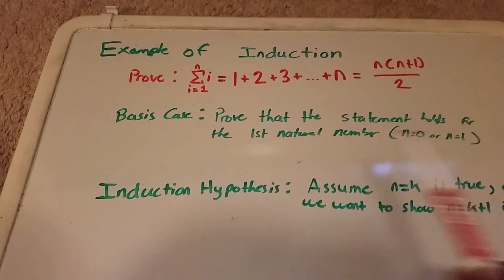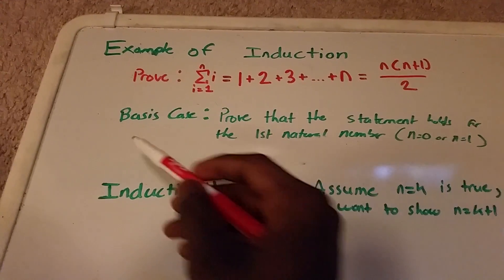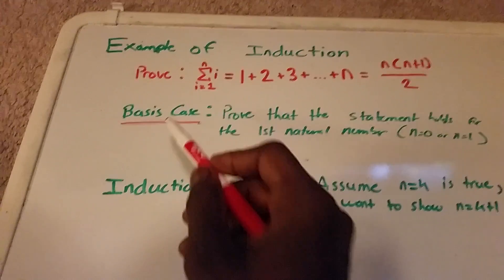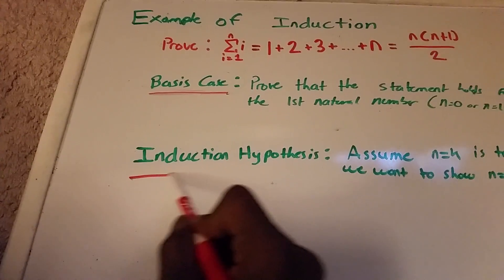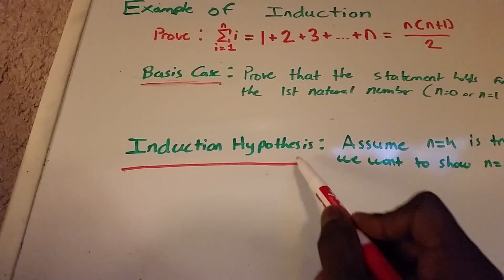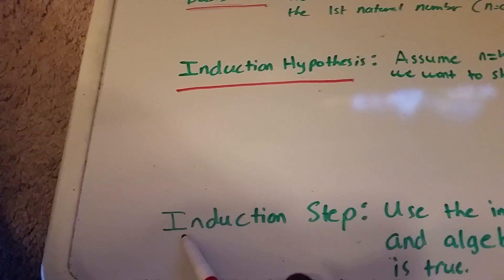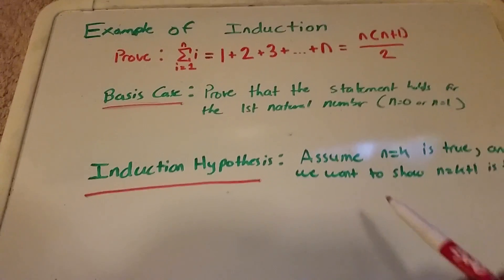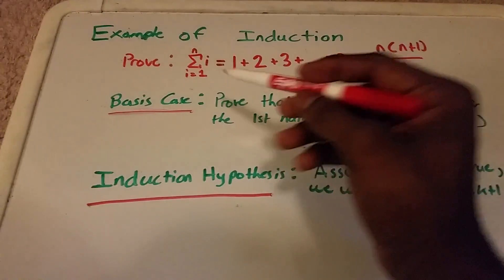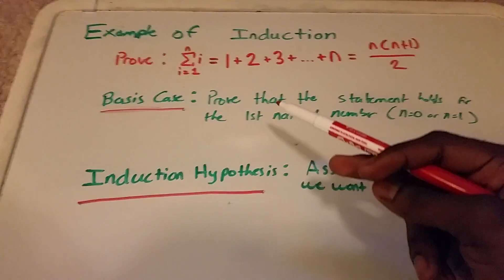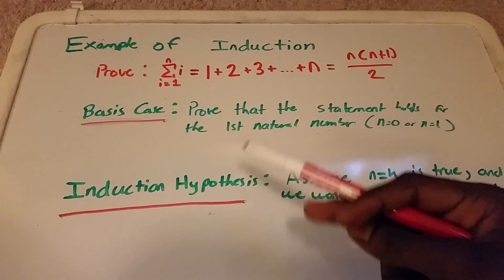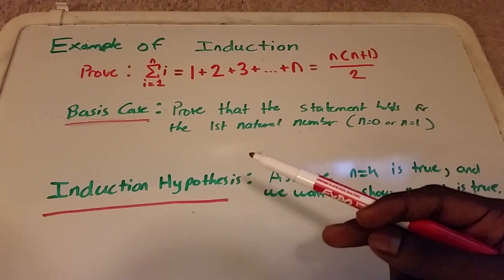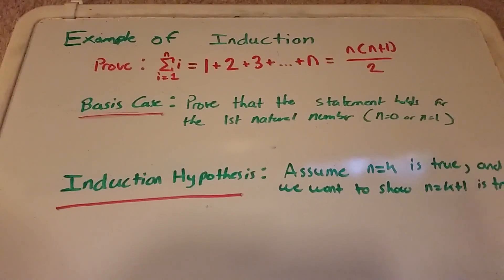To do so we need a basis case, then we need an induction hypothesis, and then finally we need the induction step. For the basis case, you prove that the statement holds for the first natural number — n equals 0 or n equals 1.